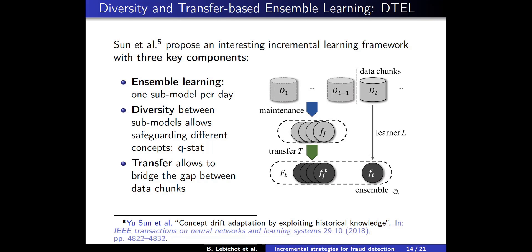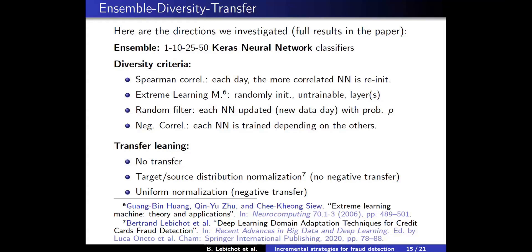The original algorithm by Sun used decision trees and was not tailored for fraud detection, so we kept the three main ingredients and transposed the idea to neural networks for fraud detection. We tried different ensemble styles using small-scale neural networks to speed up the process. We used various diversity criteria such as Spearman correlation, which is well-suited for rankings. We used extreme learning machines to increase data representation diversity, tried random filtering over the incoming chunk, tried negative correlation learning — which we'll return to — and also explored transfer learning for fraud detection.